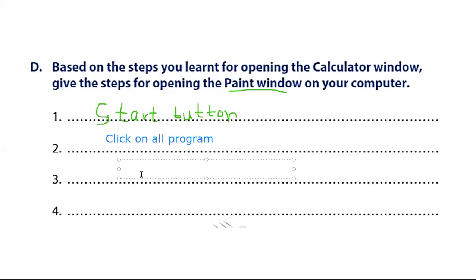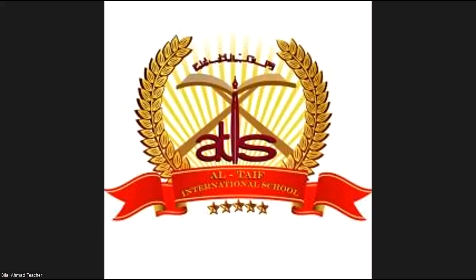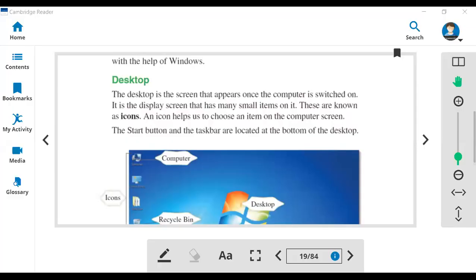Step three: select 'Accessories'. Step four: click on the Paint program. So here are the four steps you can use to open the Paint program. Let me show you — here's my start button. Click on 'All Apps'. My computer looks different because I'm using Windows 10, but you can still find the Paint program in the icons.